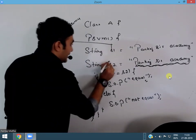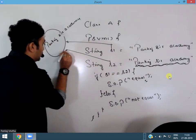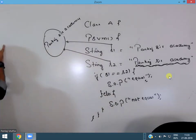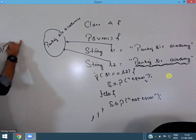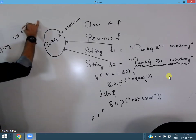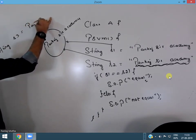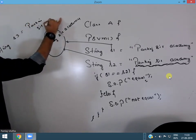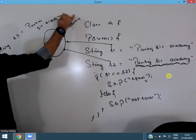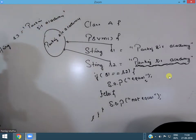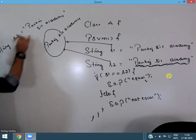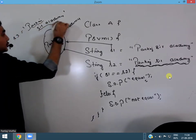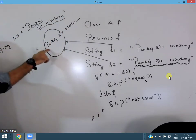Rather, S2 will also point to the same object. Again, if I write string S3, then ideally S3, because the value we are trying to store, there is already an object with that value.